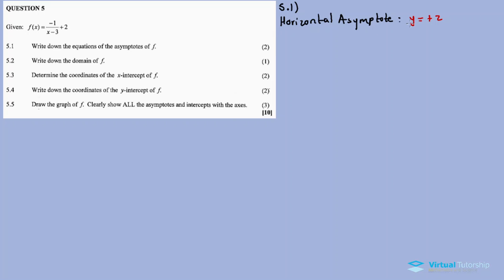The horizontal asymptote is y equals 2. For the vertical asymptote, set the denominator equal to zero, then make x the subject of the formula where x equals positive 3. This is the vertical asymptote x equals 3.